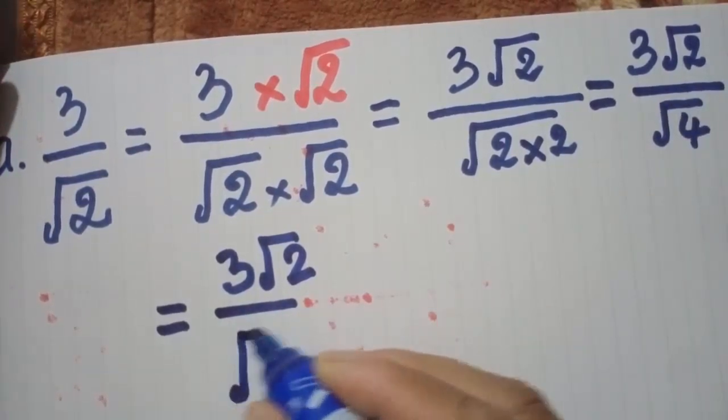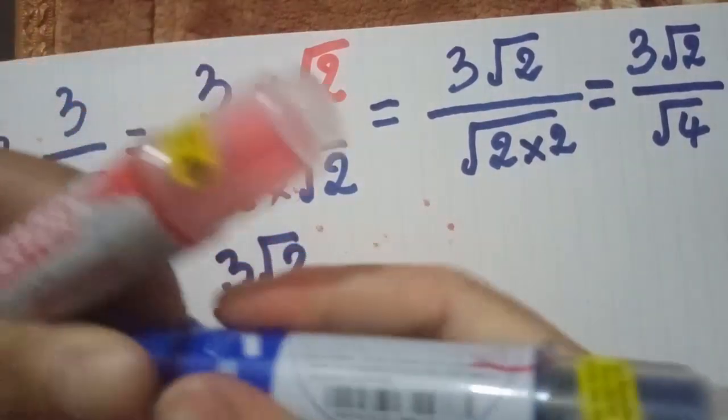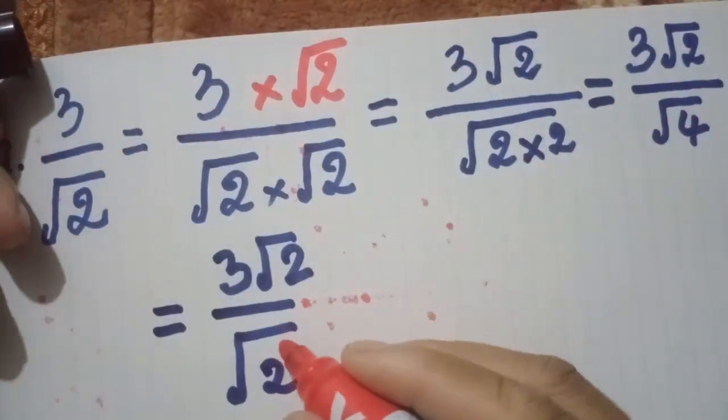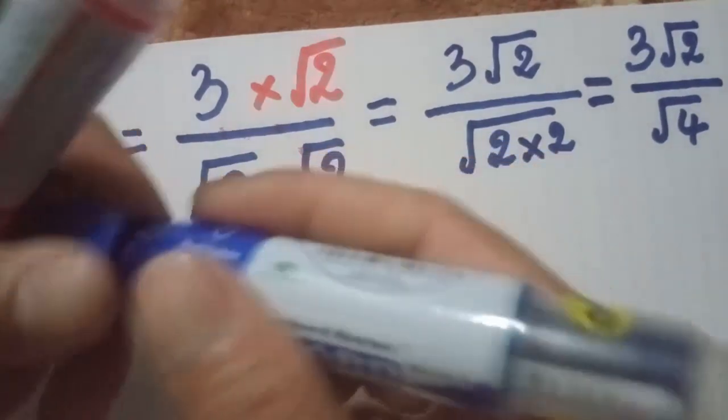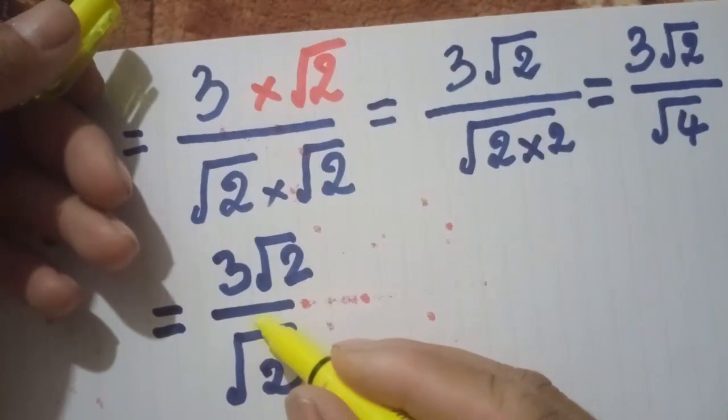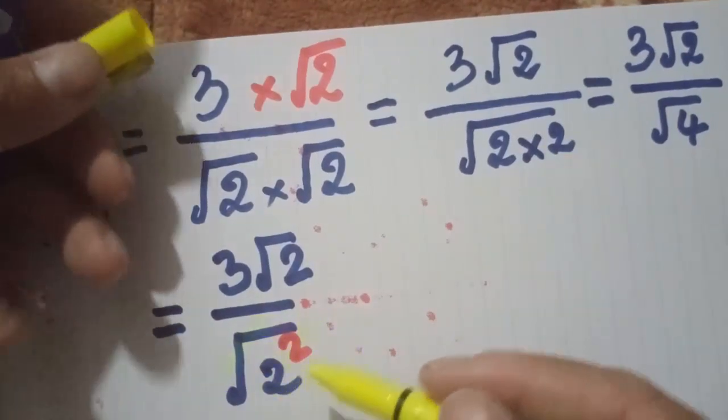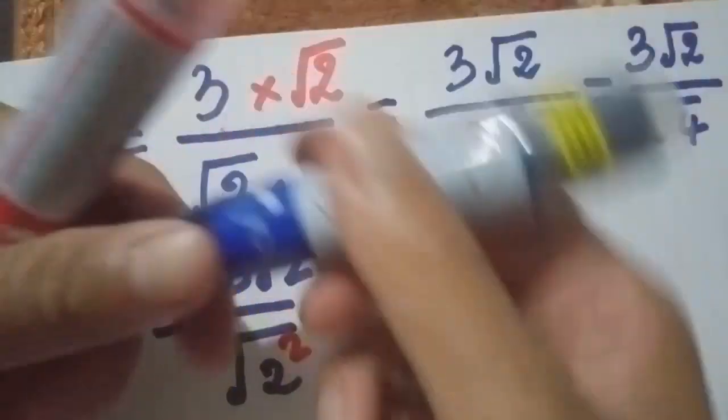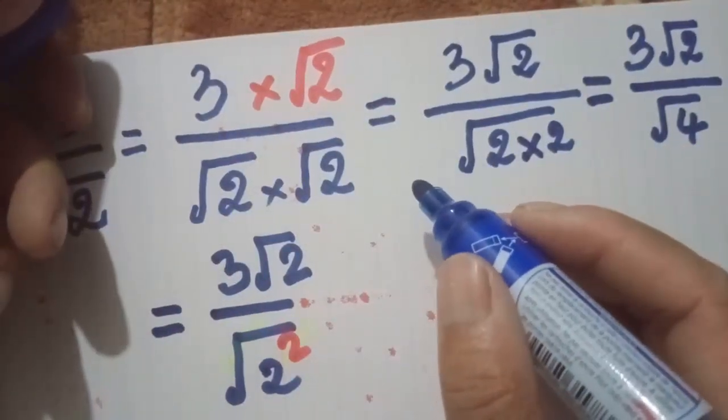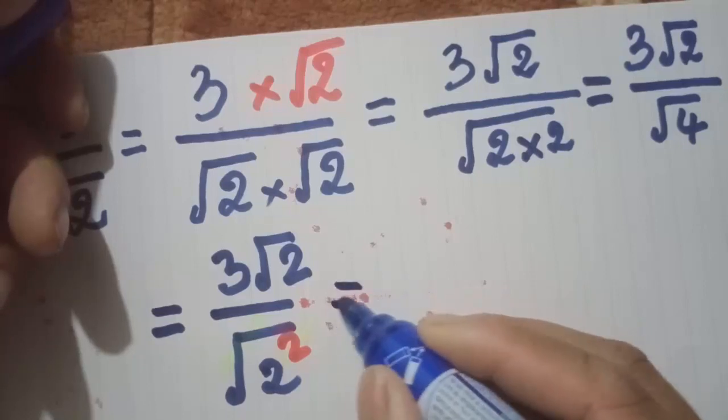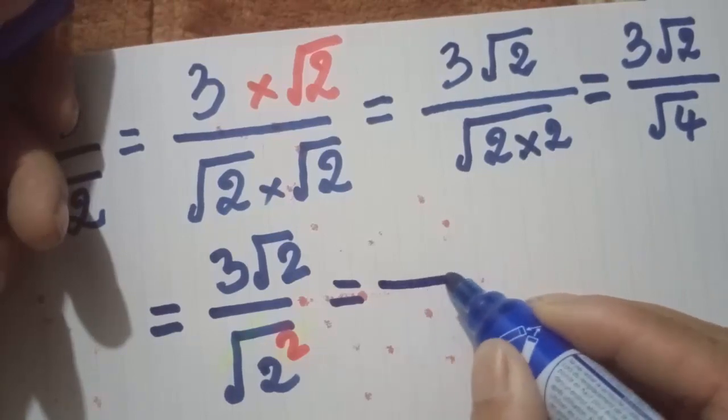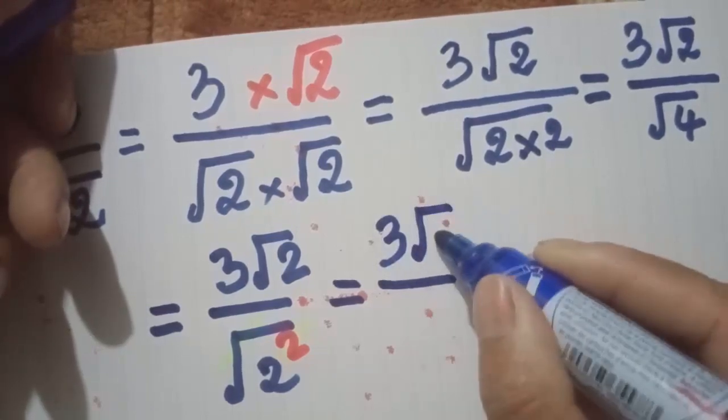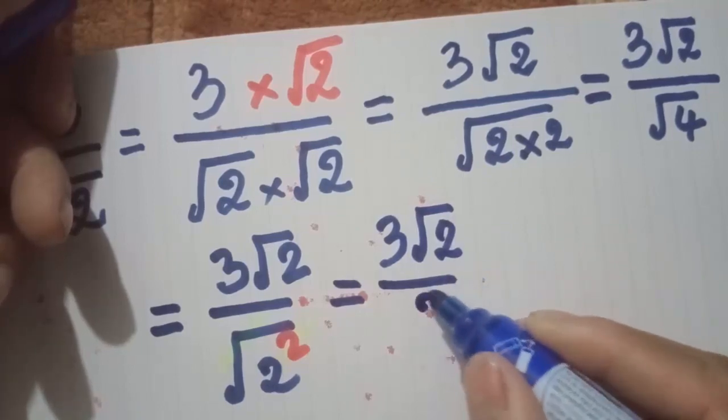From here, the radical 2 terms simplify. We can delete the radical here, we can delete the radical here. And it still equals, continue equals 3 radical 2 over 2.